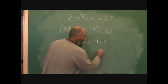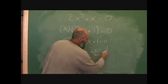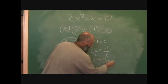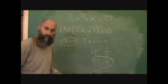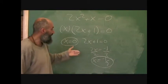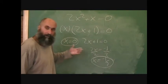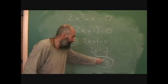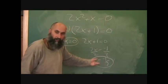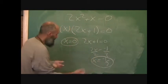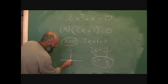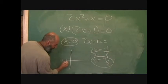Over here, this becomes 2x is equal to negative one. Divide by two on both sides, so x is equal to negative one over two — that's your second solution. For those who've already talked about quadratic equations, x equals zero and x equals negative one over two is where the parabola crosses the x-axis. So x equals zero and x equals negative a half.